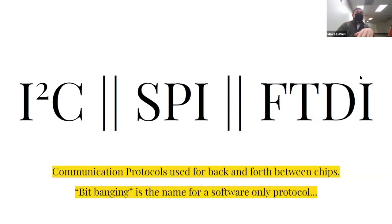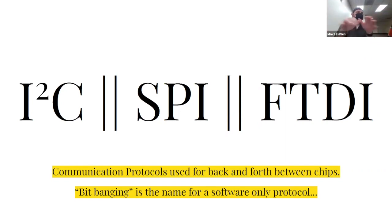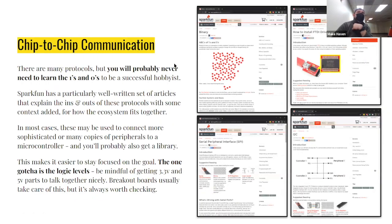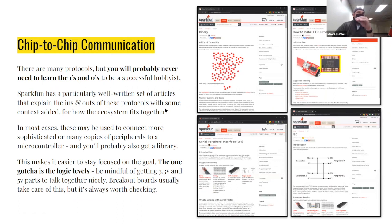There are a handful of chip-to-chip communication protocols you might work with: I²C, SPI, and FTDI — these are for back-and-forth communication between chips. Bit banging is another category where you write software-only communication without using predetermined protocols. All of these are options you can play around with. SparkFun has really great articles on each one of these communication types, explaining how they work one piece at a time.